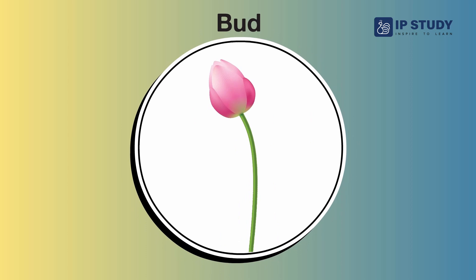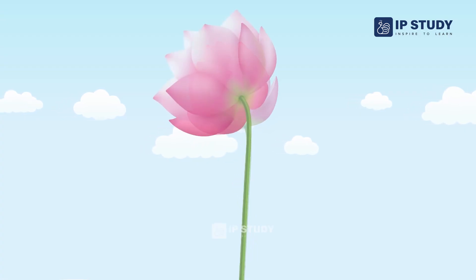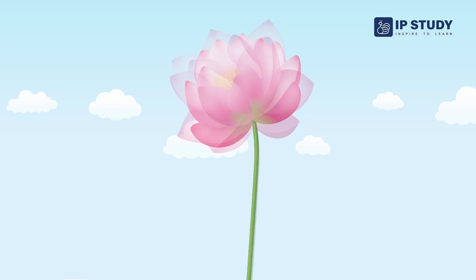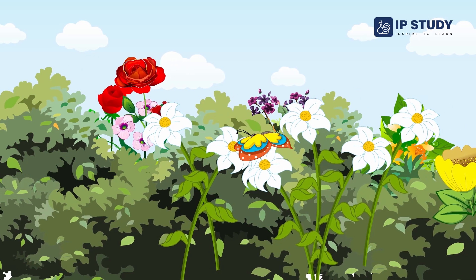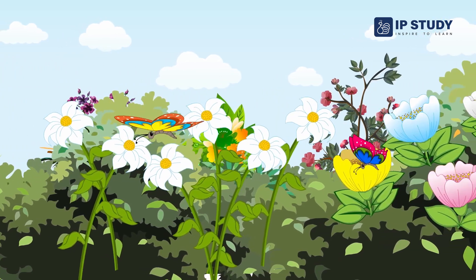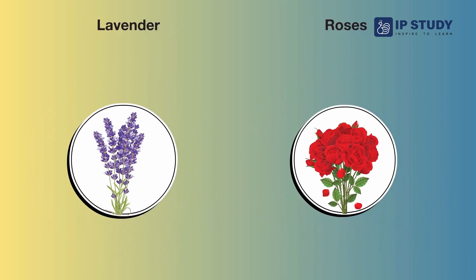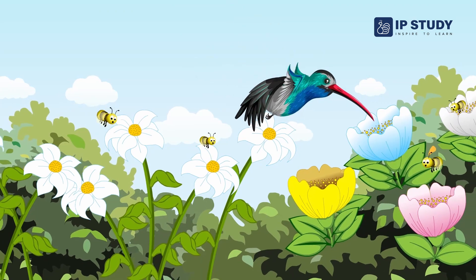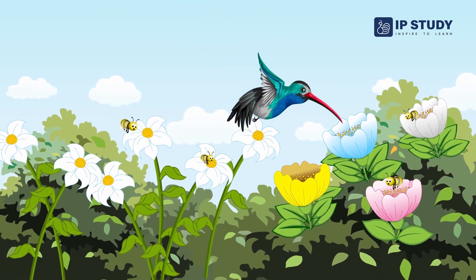Bud. A plant bud is a small part on the stem of a plant that grows into a flower or leaf. Flower. Flowers are the parts of plants that make seeds and fruits. Some examples of flowers we eat are lavender and roses. Flowers attract animals like hummingbirds and bees to make new plants.